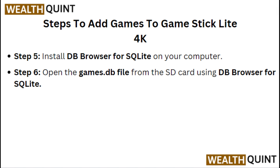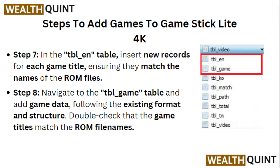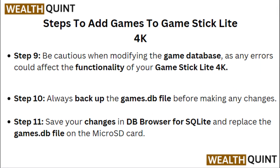Step 5: Install DB Browser for SQLite on your computer. Step 6: Open the games.db file from the SD card using DB Browser for SQLite. Step 7: In the ln table, insert new records for each game title, ensuring they match the names of the ROM files. Step 8: Navigate to the dbl_games table and add game data following the existing format and structure, double-checking that the game titles match the ROM file names.